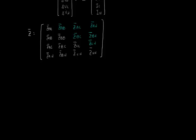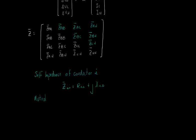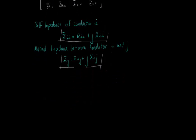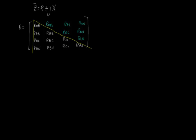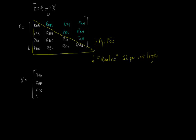Furthermore, each impedance has real and imaginary parts. The self-impedance of a generic conductor I is ZII equals RII plus j·XII. Note that RII may be a non-zero value if any earth model is considered, for example Carson's equation. We can split the series impedance matrix Z into two matrices: one for the resistances and the other for the reactances. Like the Z matrix, the R matrix is symmetrical as well. You can declare the lower triangle directly in OpenDSS. The same applies to the reactance matrix. Note that these parameters must be given in ohms per unit length, because the length is defined in a specific parameter, as we will see later.